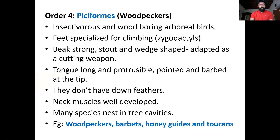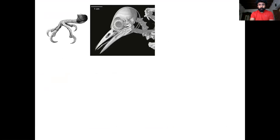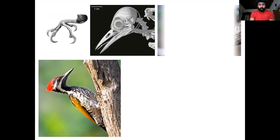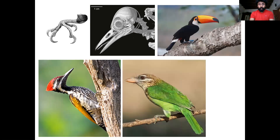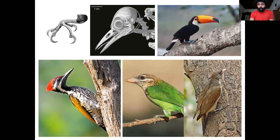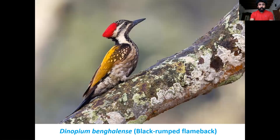The fourth order is Piciformes, which includes woodpeckers, barbets, honey guides, and toucans — though we don't have toucans in India. Look at the feet adaptation of this group. The woodpecker has a long tongue enabling it to pick caterpillars or worms from the bark of a tree. You can see the woodpecker, toucan, barbet, and honey guide here. The example for this order is Dinopium bengalense, the black-rumped flameback woodpecker.